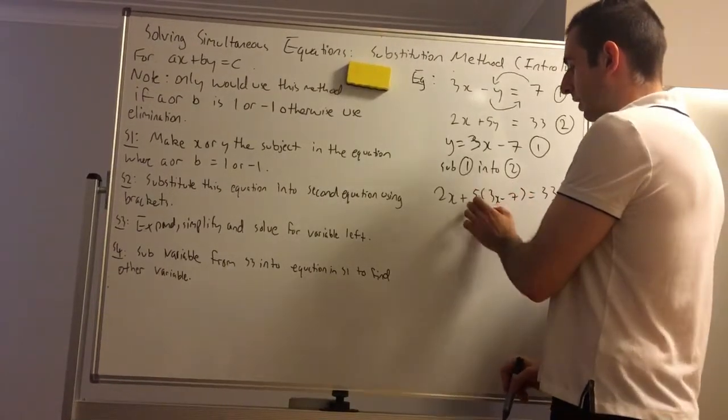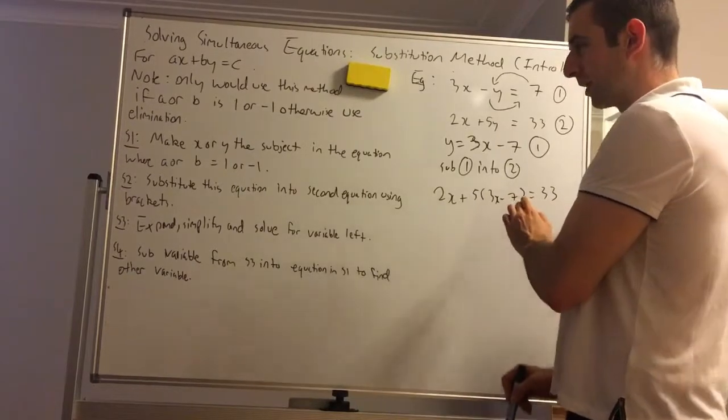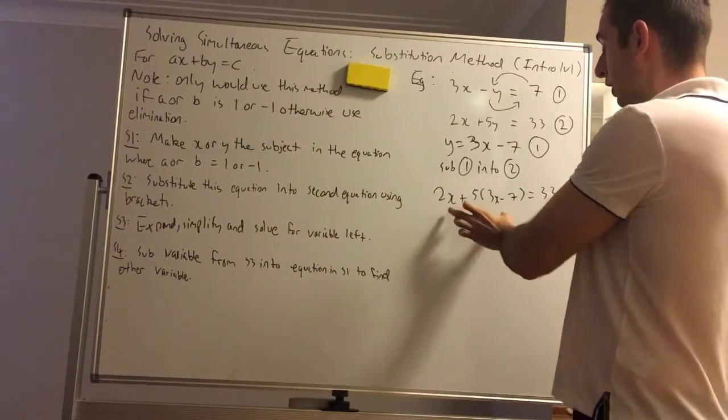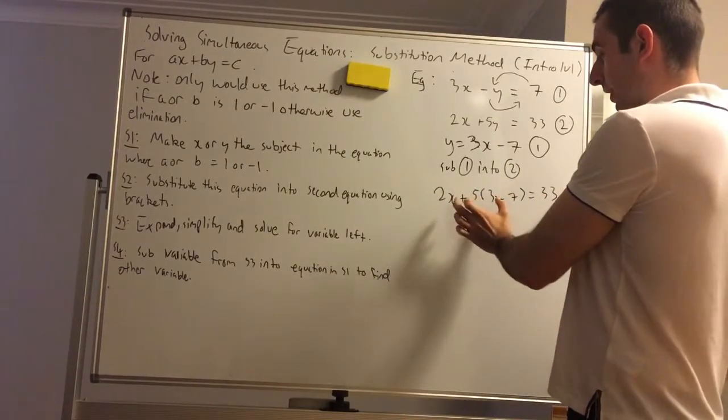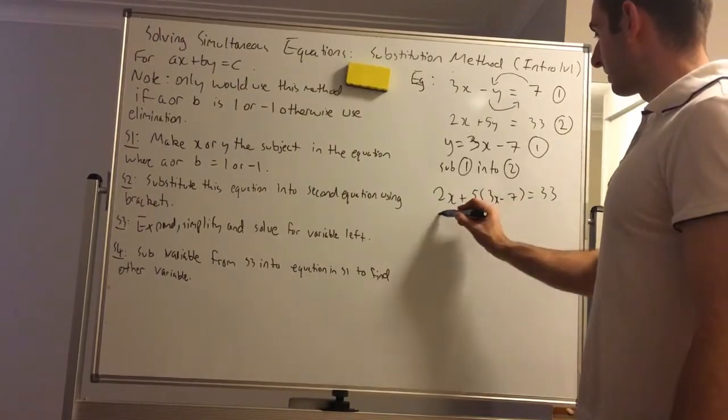Very quickly, if you have the brackets the other way, you might get a little operation wrong. It might be 5 times 3 and you don't times the 7. So now step 3. At this point, you should have an equation in one variable only, in this case x. So we can expand, simplify, and solve for x.